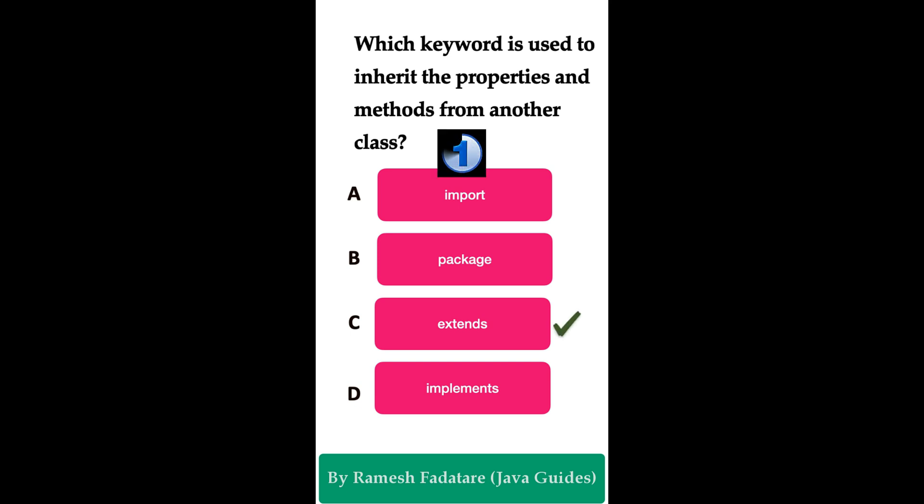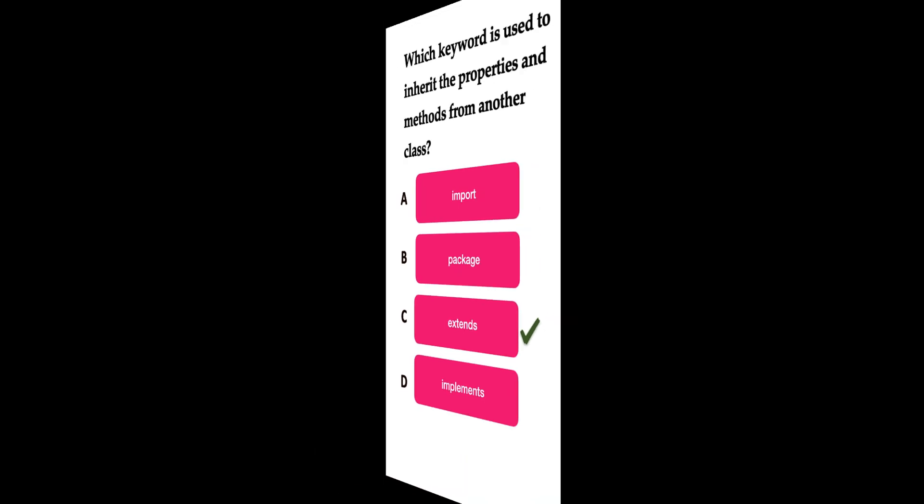The correct answer is option C: the extends keyword. This is the inheritance concept. For example, if we have class A with properties and methods, and class B wants to inherit those properties and methods from class A, then class B can use the extends keyword. This is how inheritance works, and in Java we use extends to extend a class from another class and inherit its properties and methods.